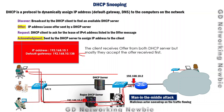There is sometimes a question about what happens if there are multiple DHCP servers. In that case, the client can receive offers from multiple DHCP servers. The client will mostly accept the offer received first. For example, if the DHCP offer from the rogue server arrived first, the client gets assigned an IP address from that rogue DHCP server.